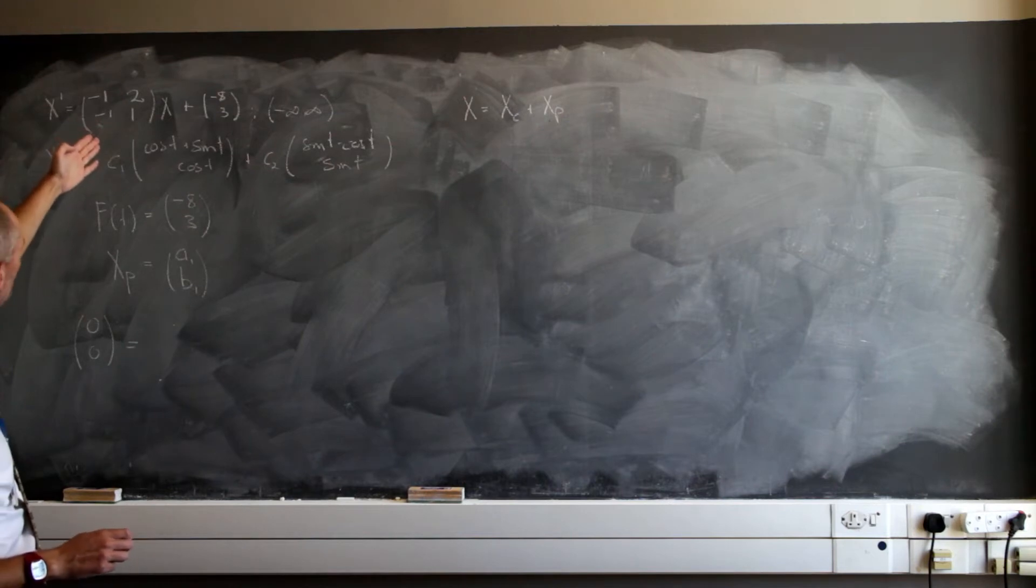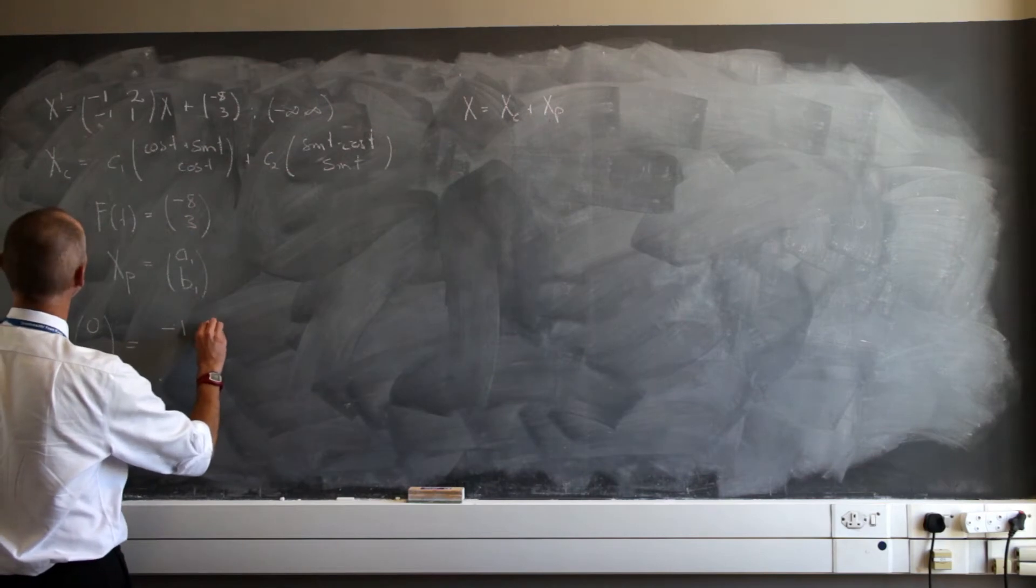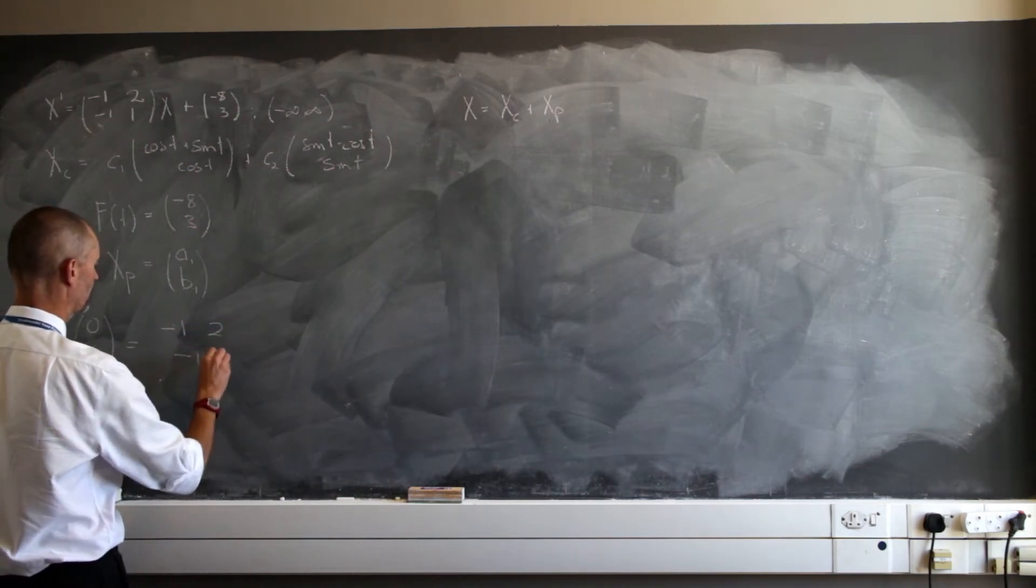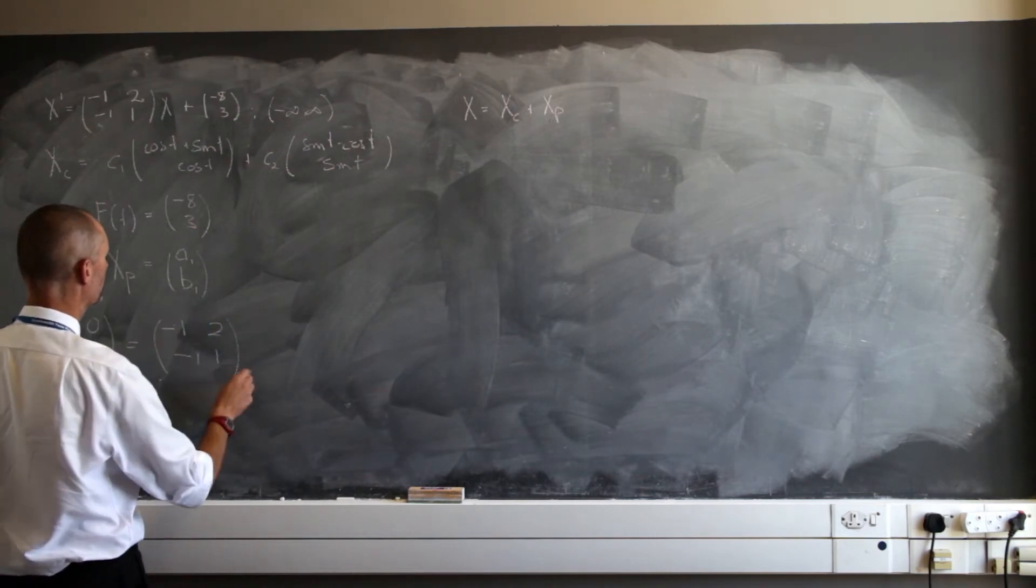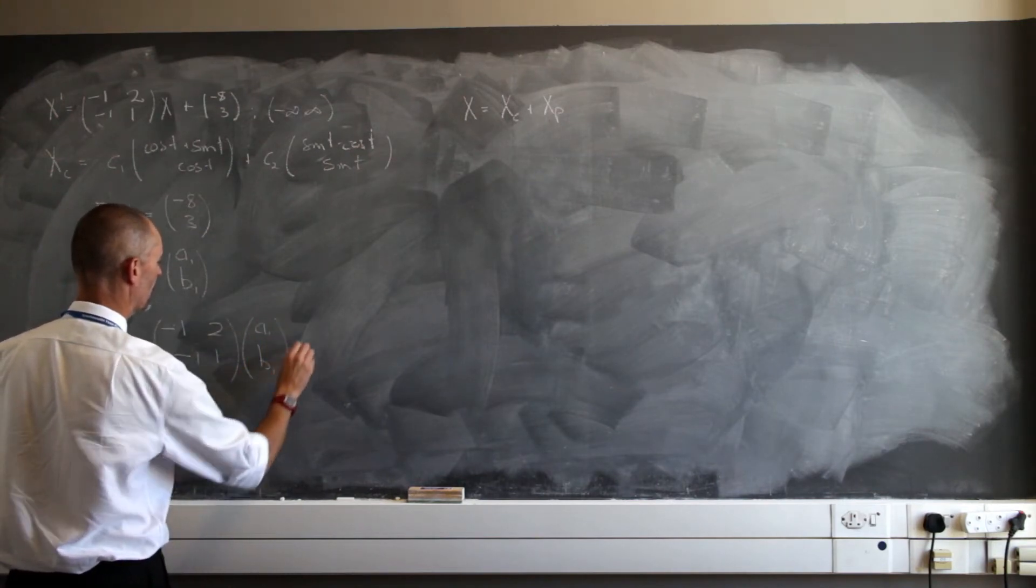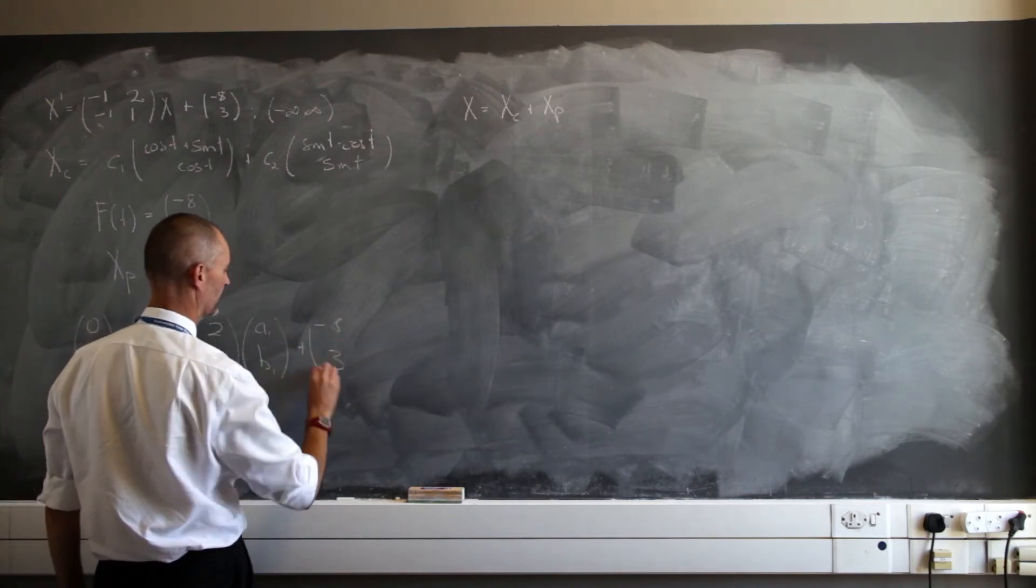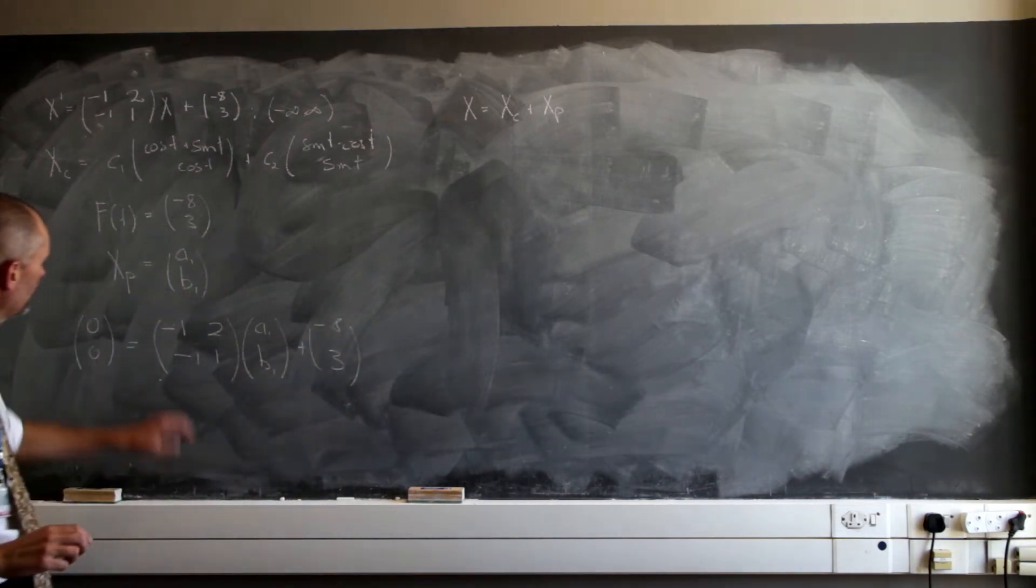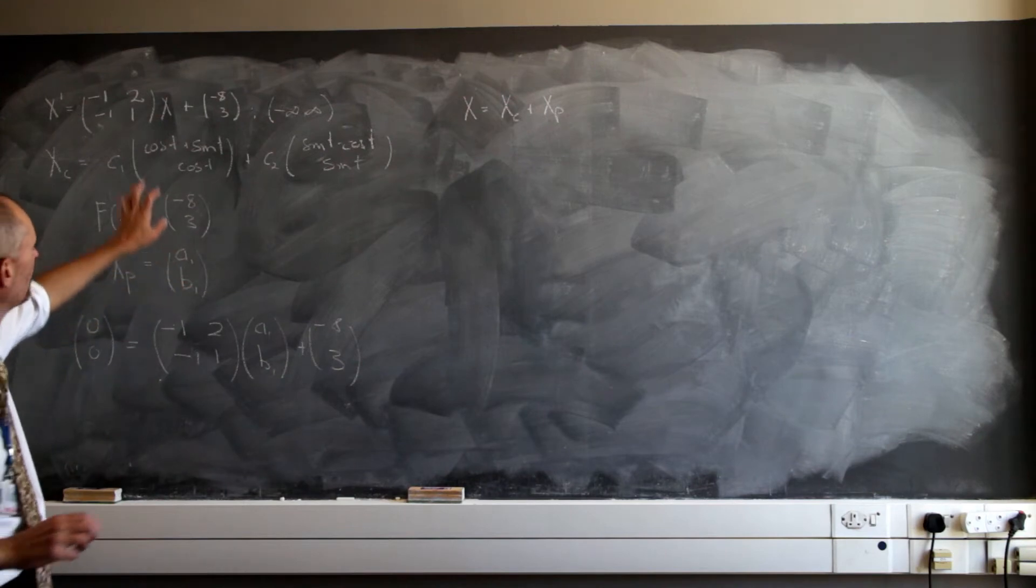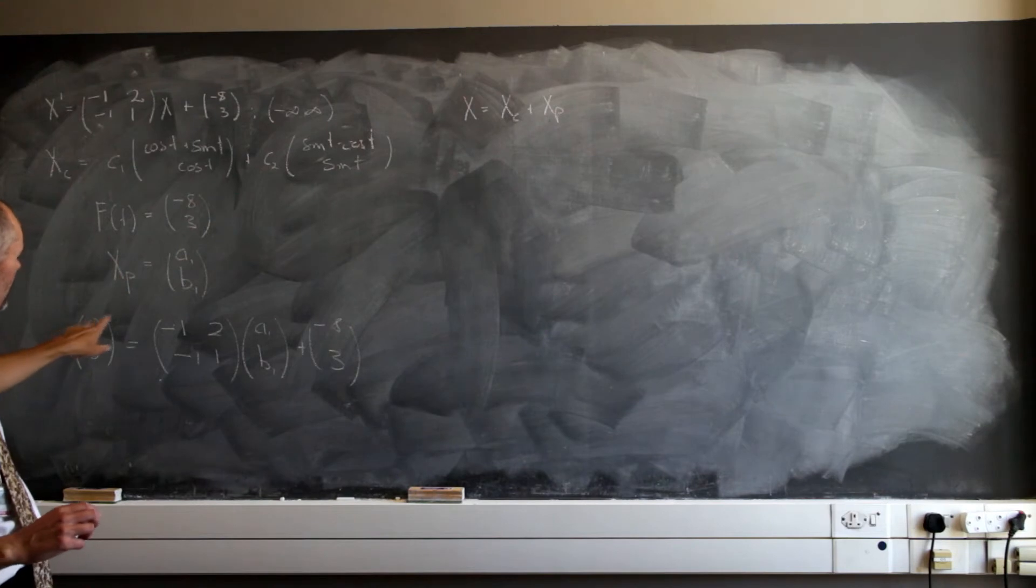Here we're going to have a negative 1 and a 2, and a negative 1 and a 1. And we're going to multiply this by a sub 1 and b sub 1, and to that we've still got to add negative 8 and 3. So all I've done is I've substituted this into my original problem. The first derivative of a constant is 0, the first derivative of a constant is 0.